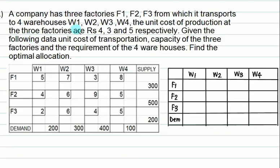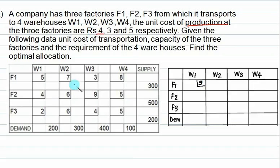In this problem, the transportation cost from factory F1 to warehouse 1 is 5, from F1 to warehouse 2 is 7, and likewise a complete distribution is given. The production cost at factory 1 is Rs 4. So the total cost from F1 to warehouse 1 becomes 5+4=9, to warehouse 2 is 7+4=11, another is 3+4=7, and 8+4=12.